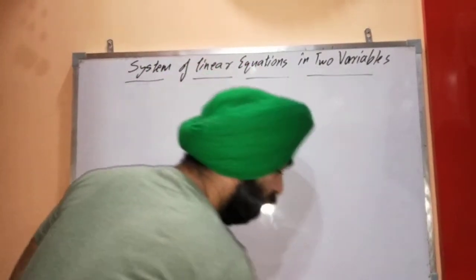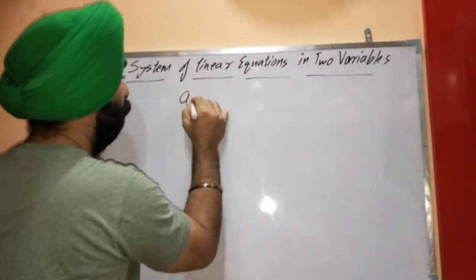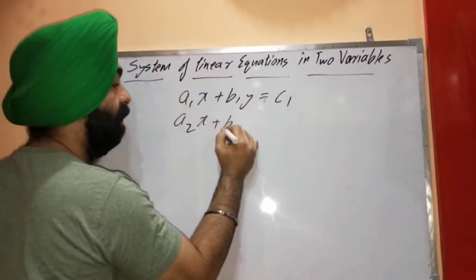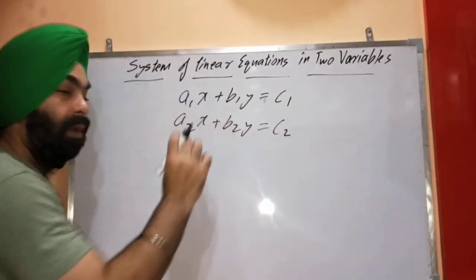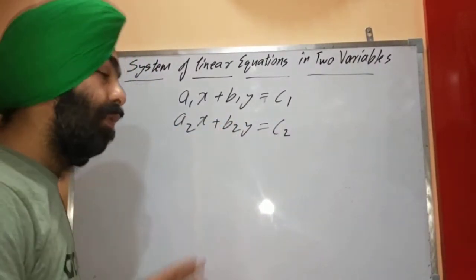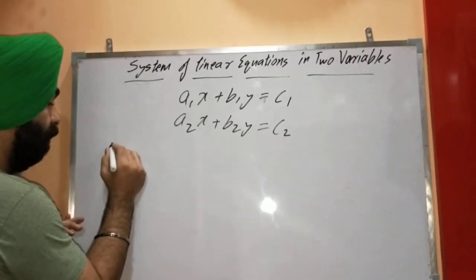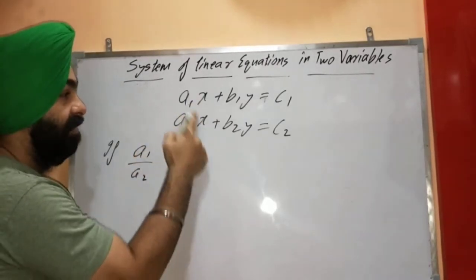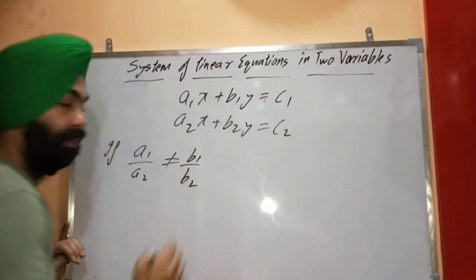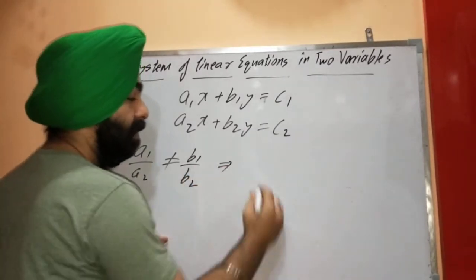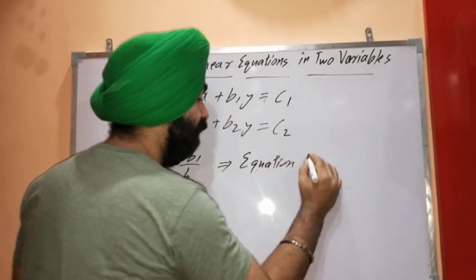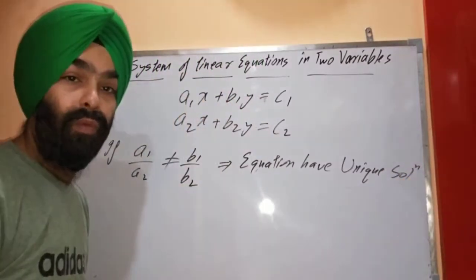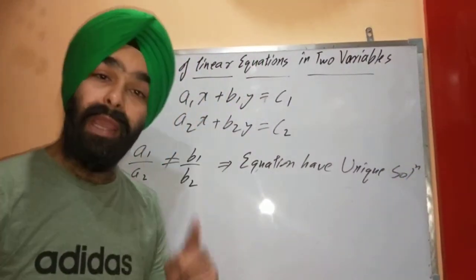Before discussing methods of solving, I would like to tell you one more thing. We can also judge the shape of the graph just by doing small calculations with the equations before solving them. If a1/a2 — the ratio of coefficients of x in both equations — is not equal to b1/b2, that means the equations have a unique solution.